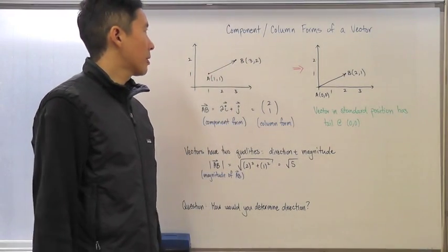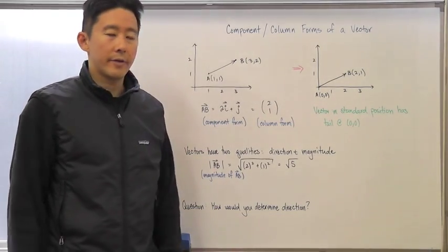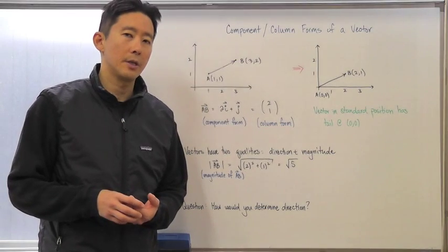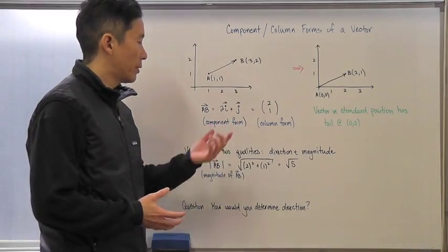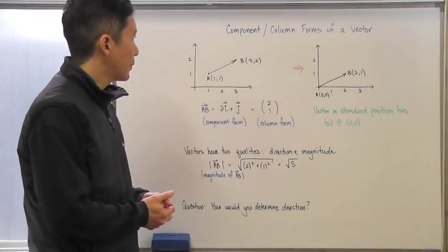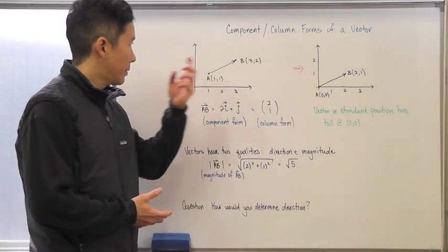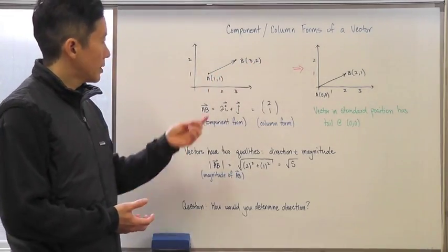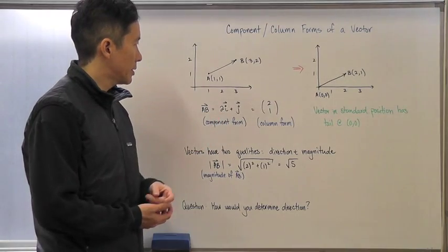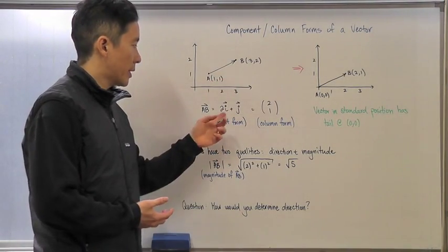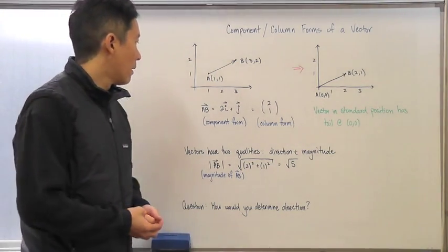Let's talk about the component or column forms of a vector. We've already seen that vectors can be rewritten as a linear combination of i and j vectors, and we're going to call that the component form of the vector. For example, take a vector with starting point A at (1,1) going to B at (3,2). To get from one point to the other, we need two i vectors plus one j vector, giving us the component form: 2i + j.